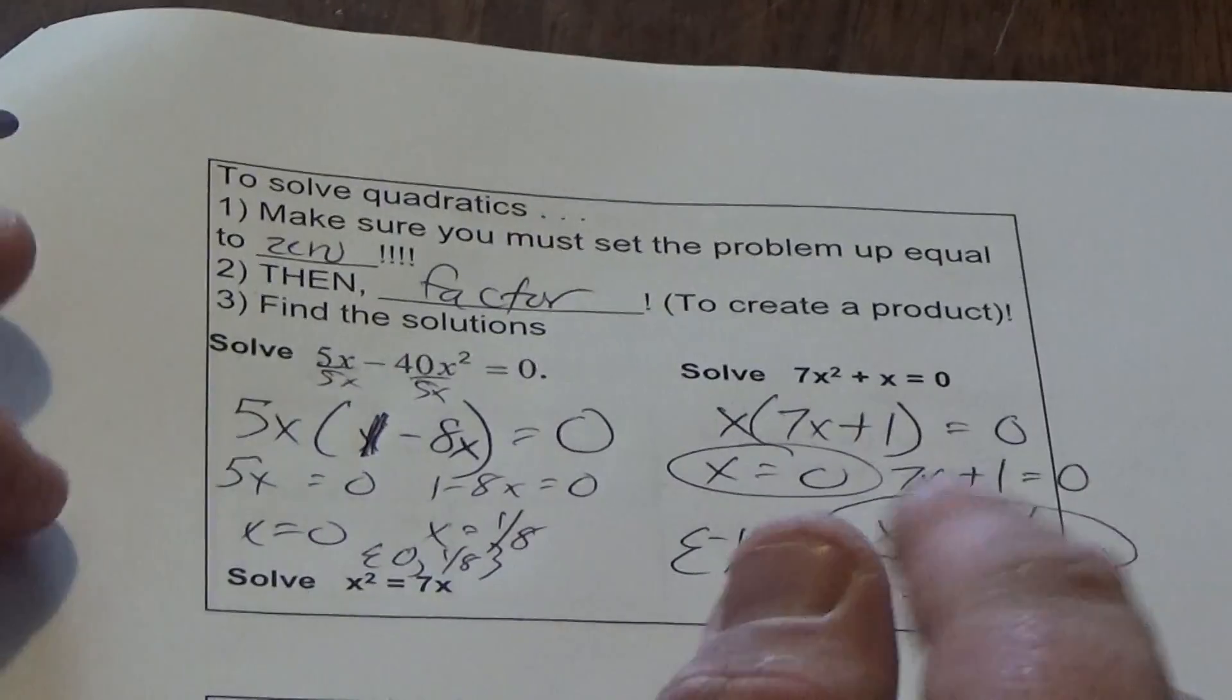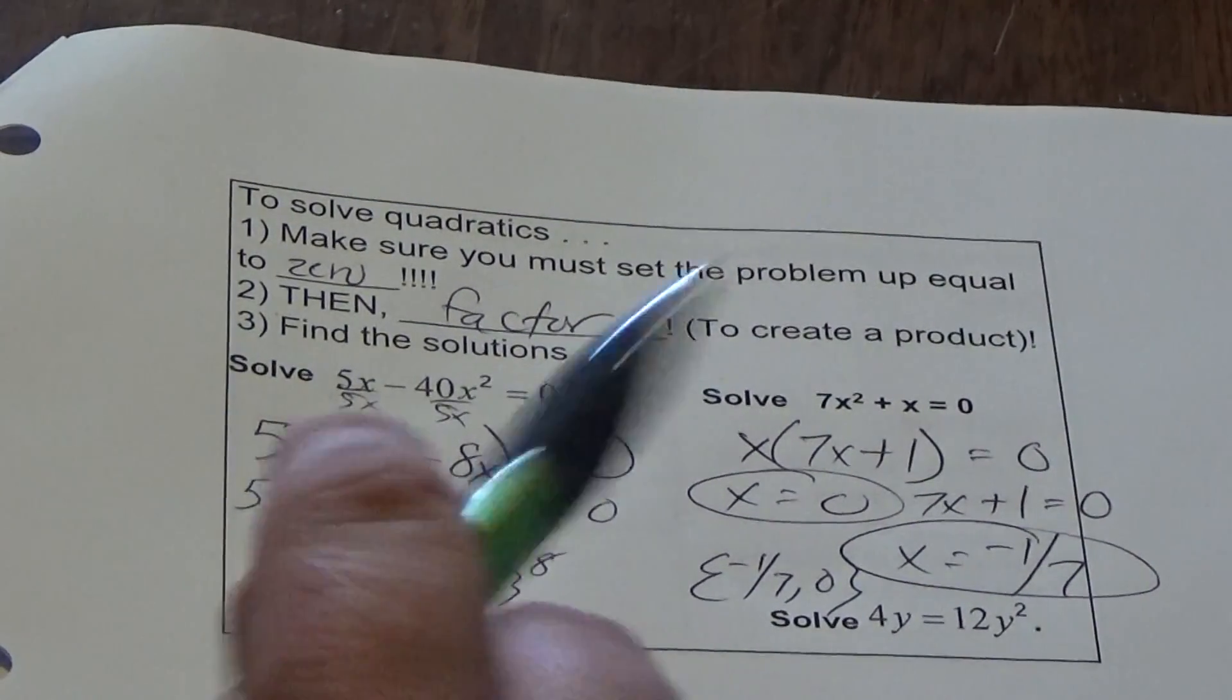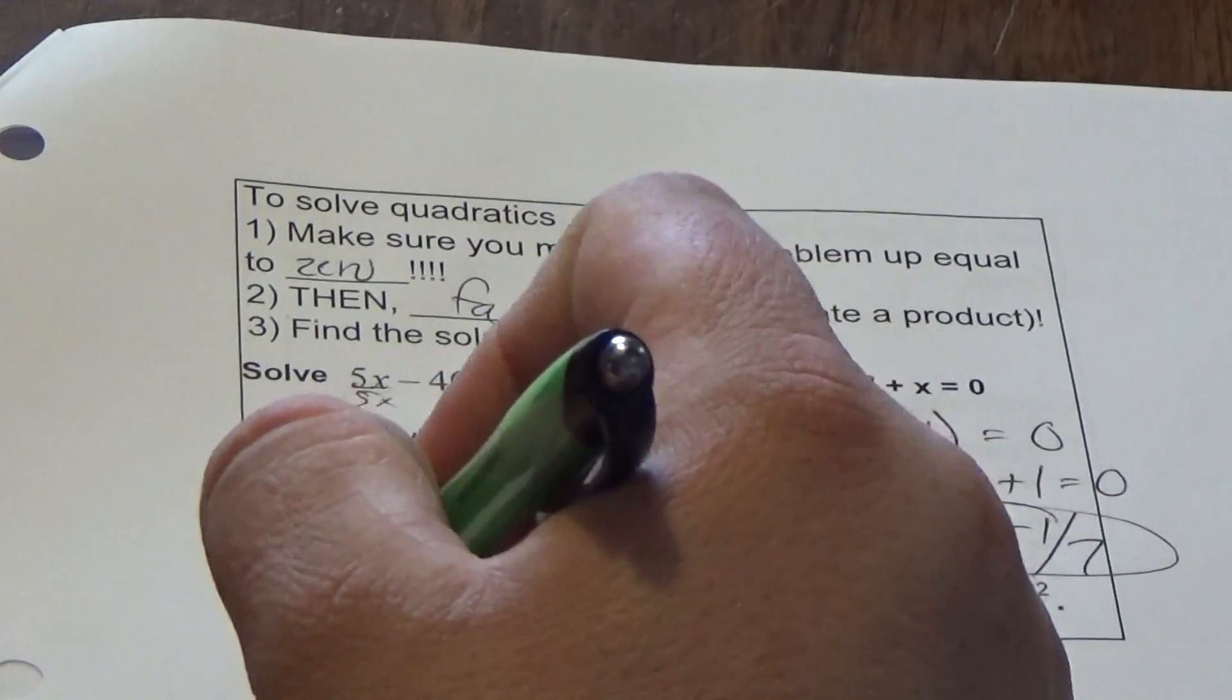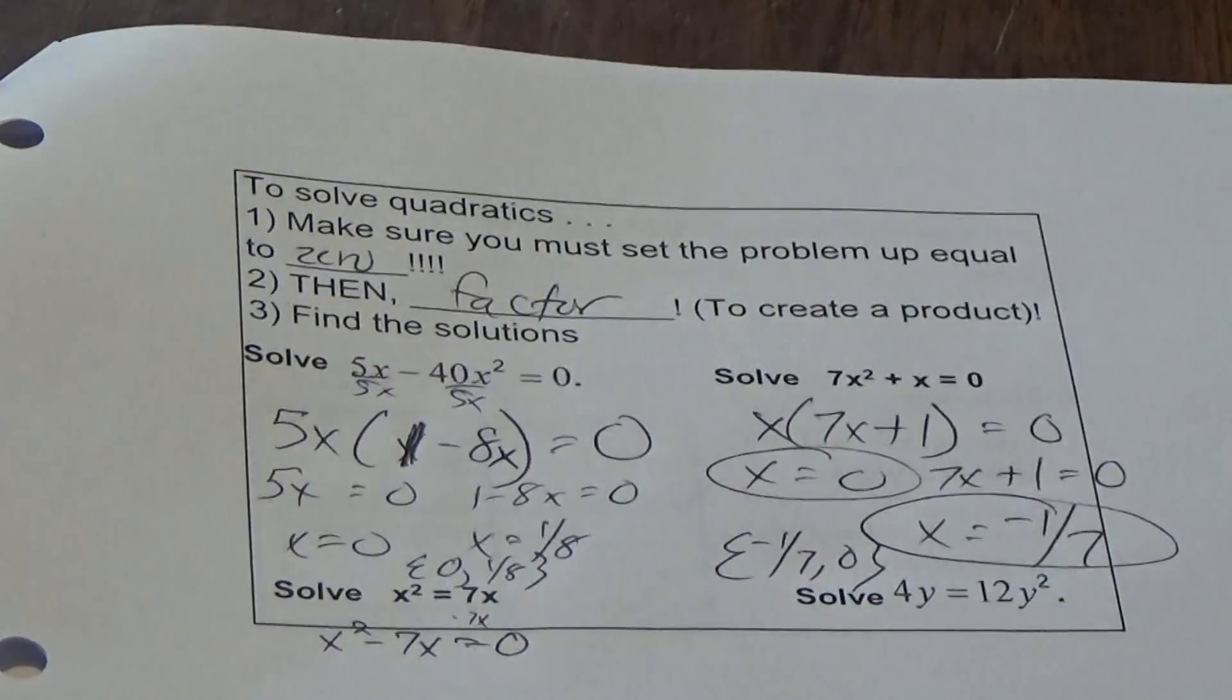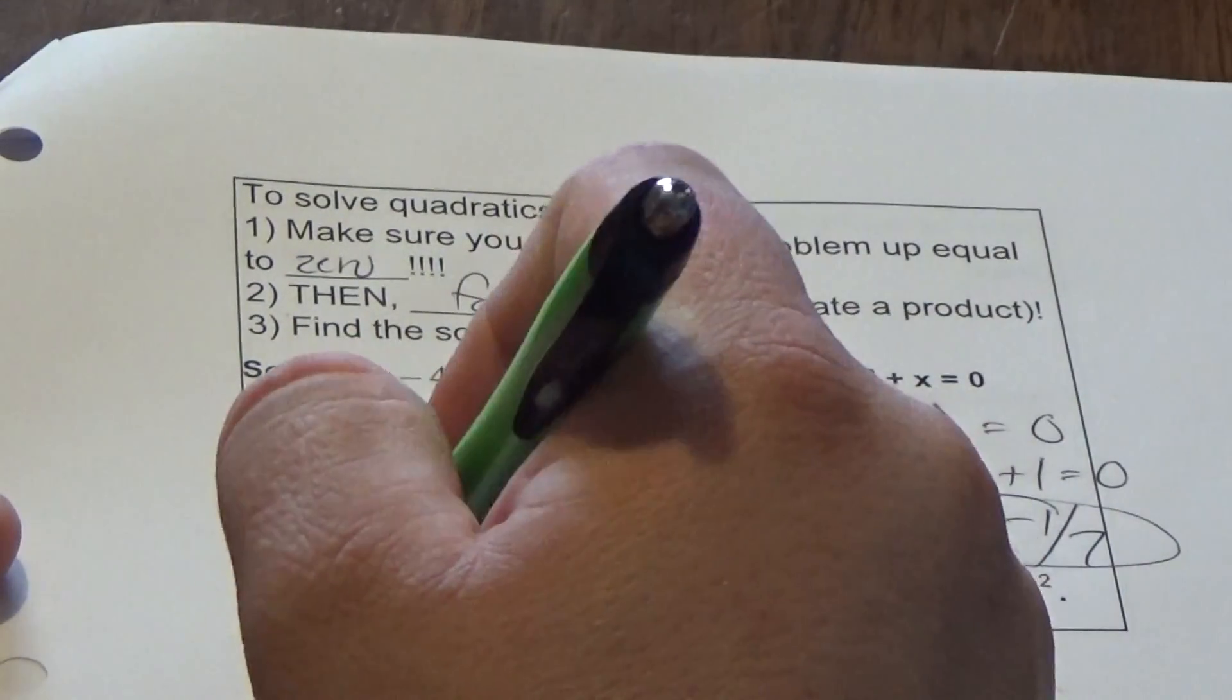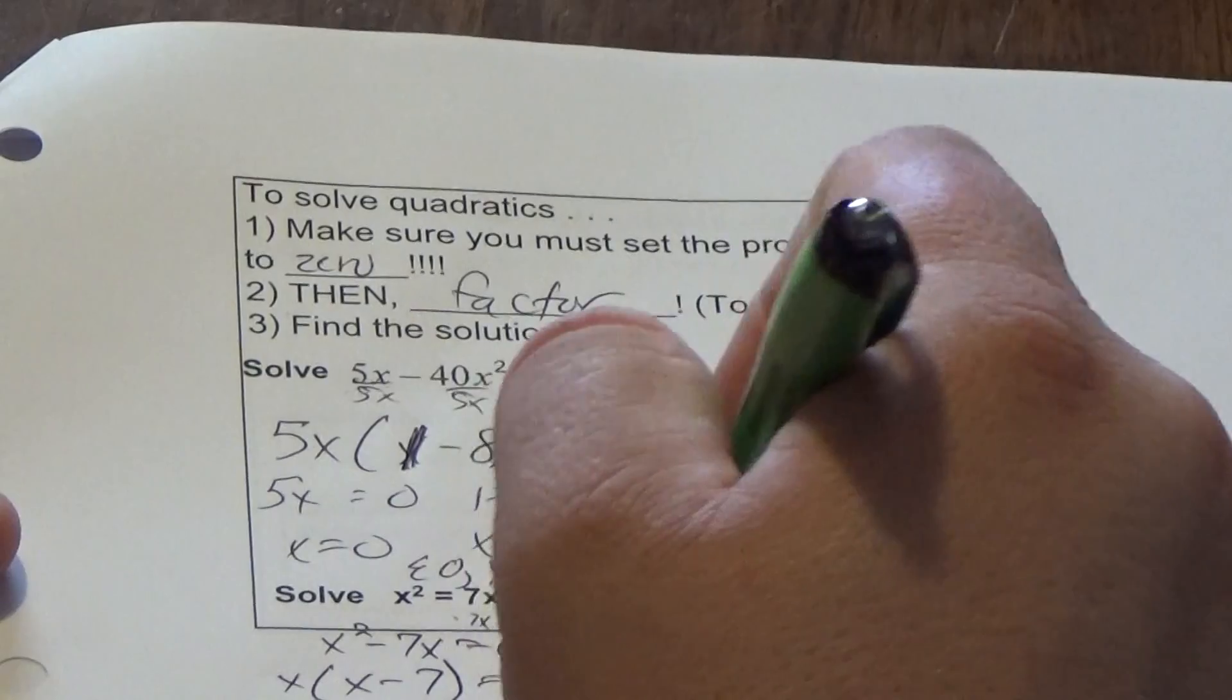Let's talk about what happens when it's not equal to 0. How do I set it equal to 0? Well, I'm going to move something to the other side. When I subtract 7x, I now have x squared minus 7x equals 0. Now I've done what I needed to do. Now I can take the GCF: x times (x minus 7), and I get {0, 7}.